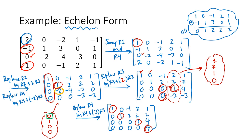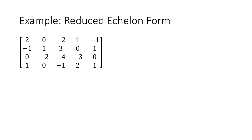Now I'm going to go through the same process for the same matrix, but this time I'll get it into reduced echelon form — which takes more steps since reduced echelon form is more restrictive. Just to show a different path, instead of doing a swap as my first step, I'm going to do a scale. We want that first position to be a 1, so I'll scale row 1 by 1/2.